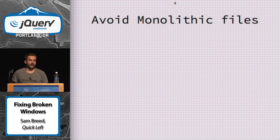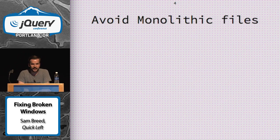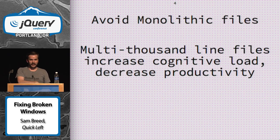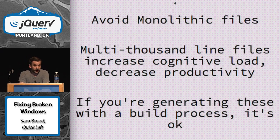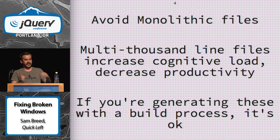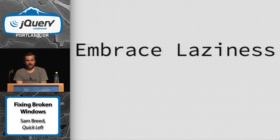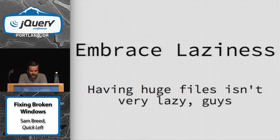Monolithic files — everyone loves writing JavaScript in one large, enormous file. We've all done it at some point. Multi-thousand-line files increase cognitive load and decrease productivity. If you have to spend time thinking about where something is in the context of a larger file, you're wasting time. Things should be self-organizing and self-documenting. This is about embracing laziness — most good developers are profoundly lazy, and creating more work for yourself later is the opposite of laziness.